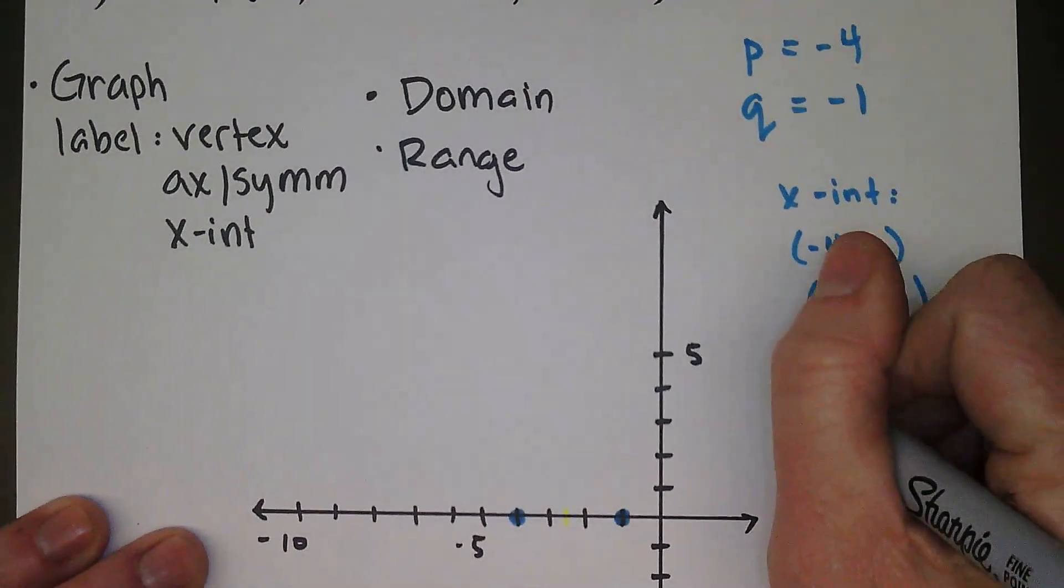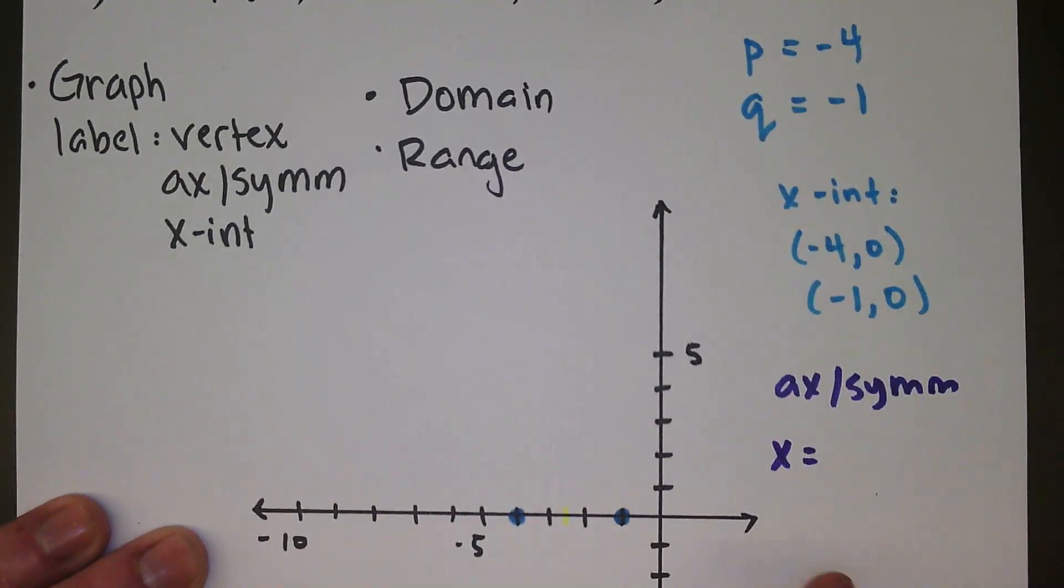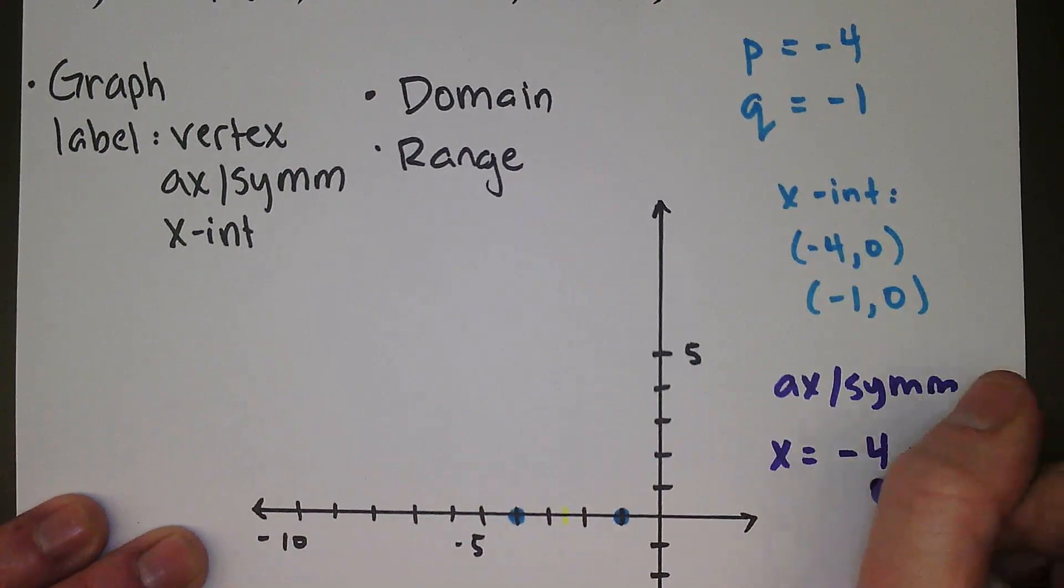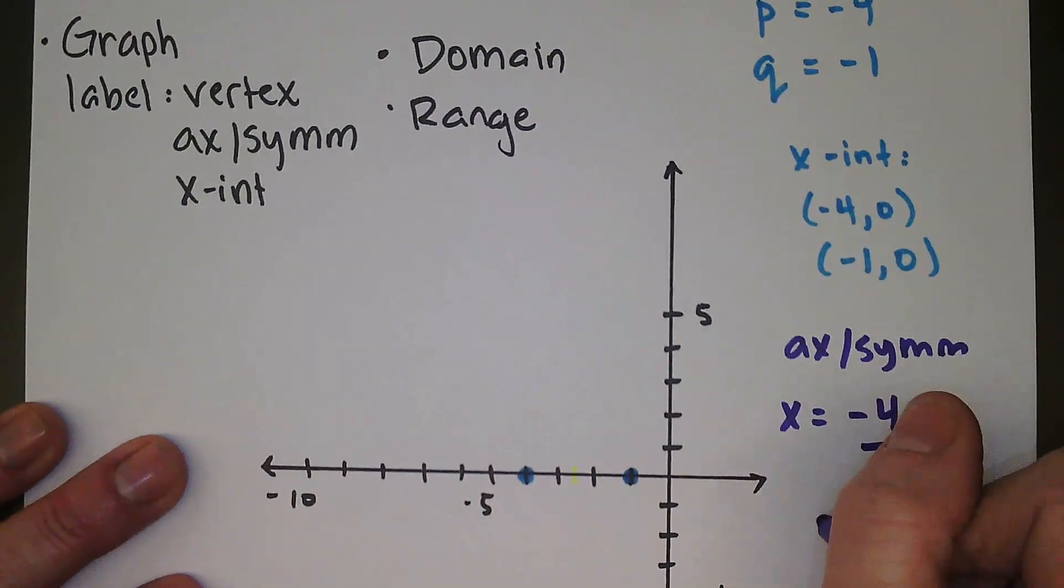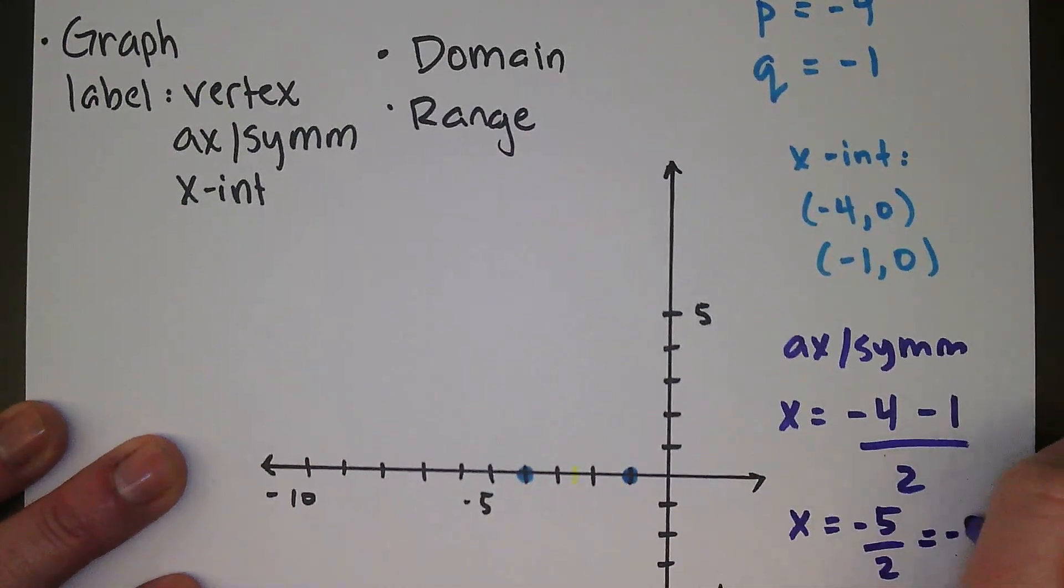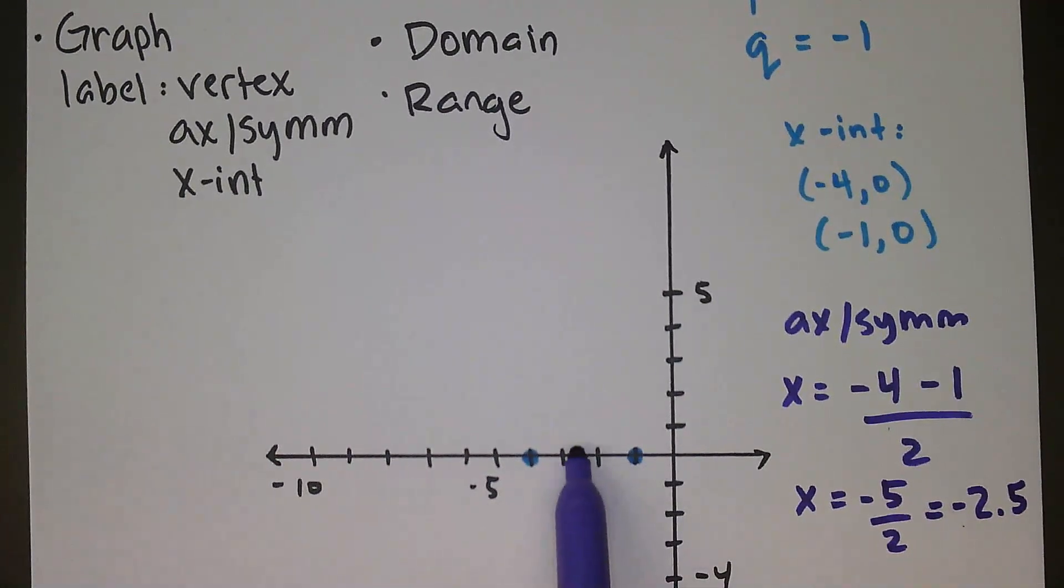But we want to average these two numbers. So to get the axis of symmetry, we're going to do x equals, and then we'll average these two numbers, the p and the q, -4 minus 1, and then we're going to divide that by 2. So let's see. We get negative 5 halves, which is the same as negative 2.5.